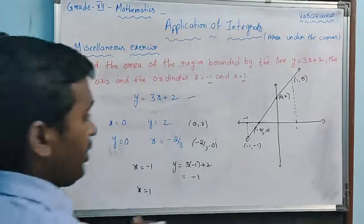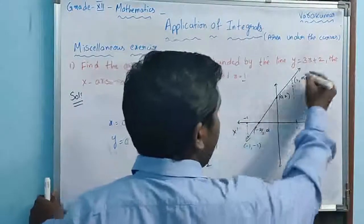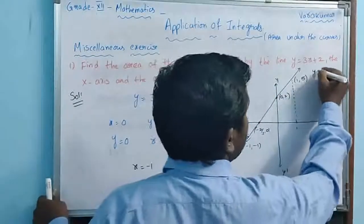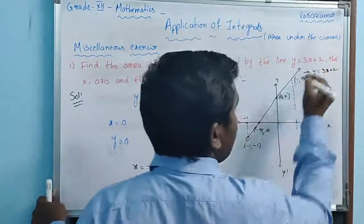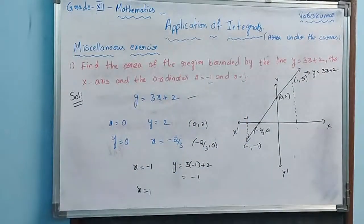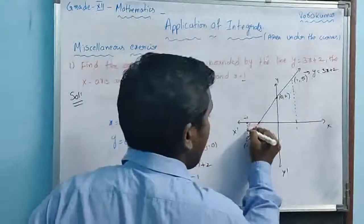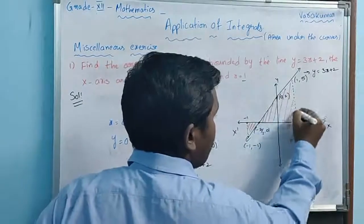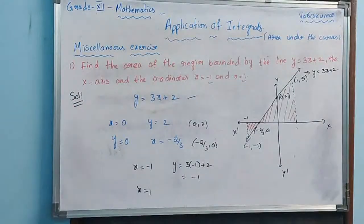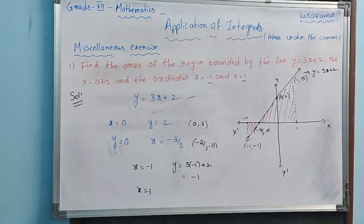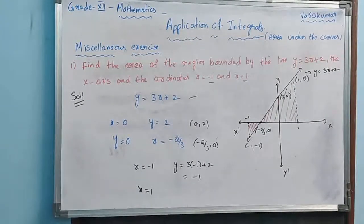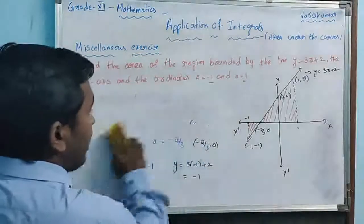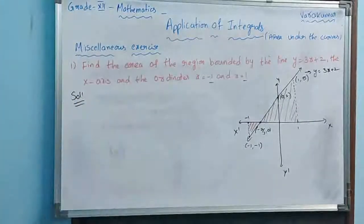We need to find the area under the line y = 3x + 2. Looking at the shaded region, some part is below the x-axis and some part is above the x-axis. The line intersects the x-axis at x = -2/3. We are taking the area with respect to the x-axis.